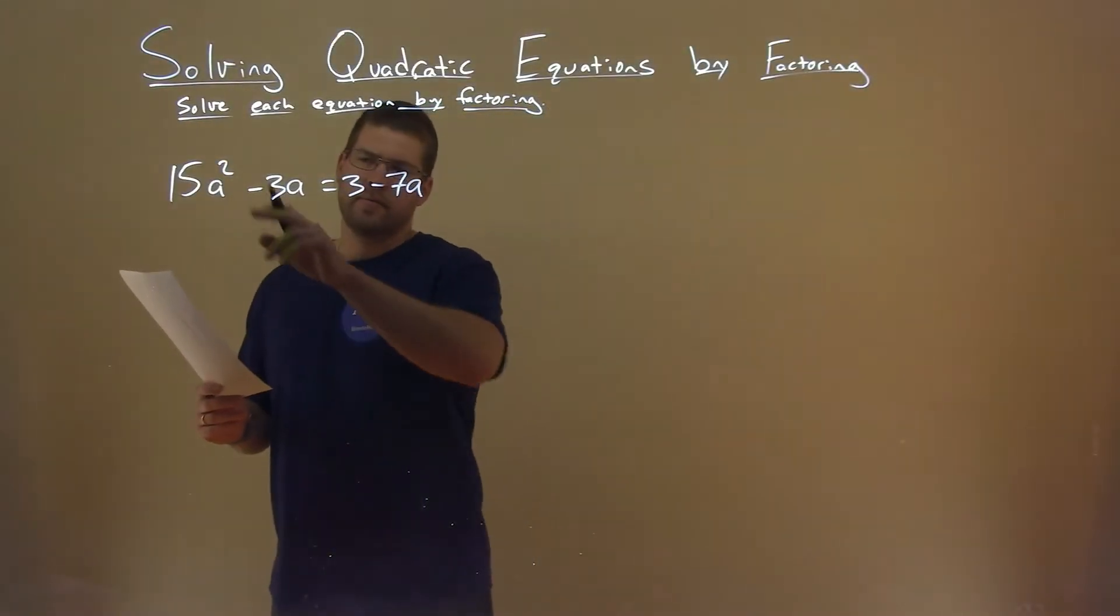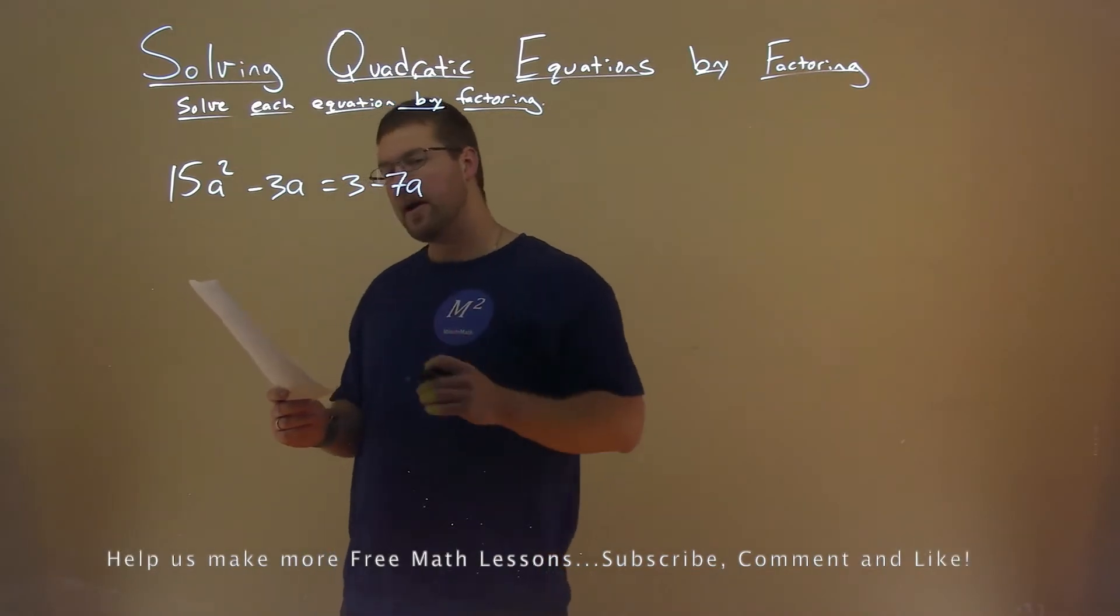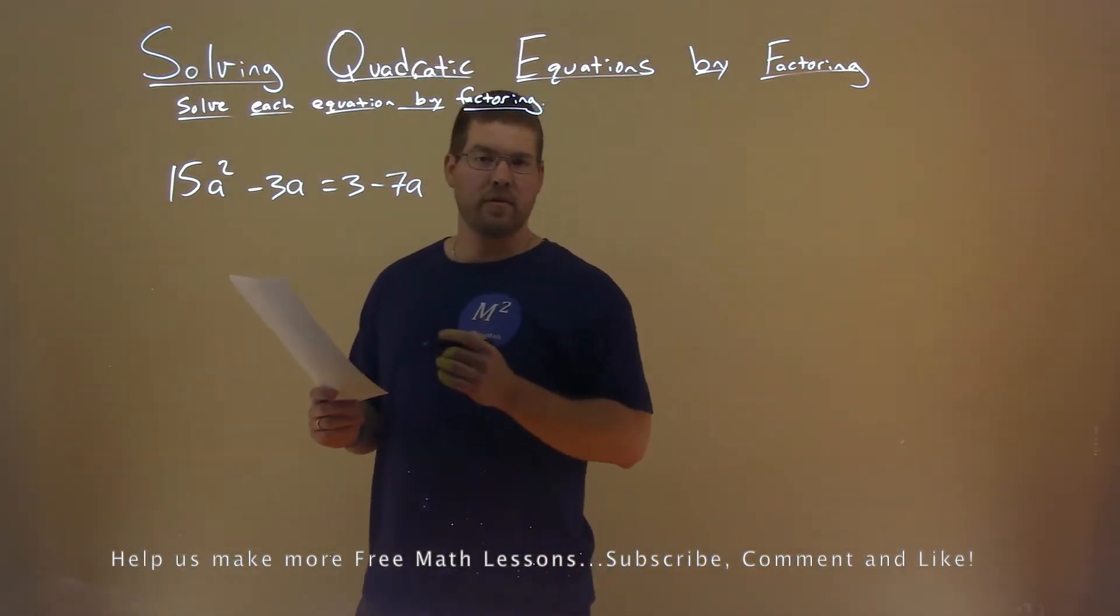We're given this problem right here: 15a² - 3a = 3 - 7a, and we want to solve this by factoring.